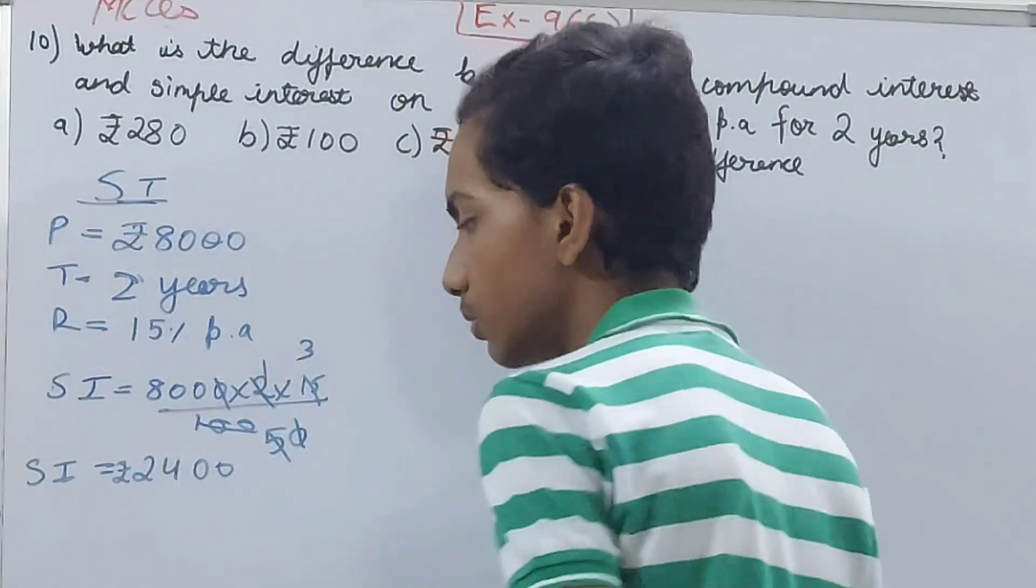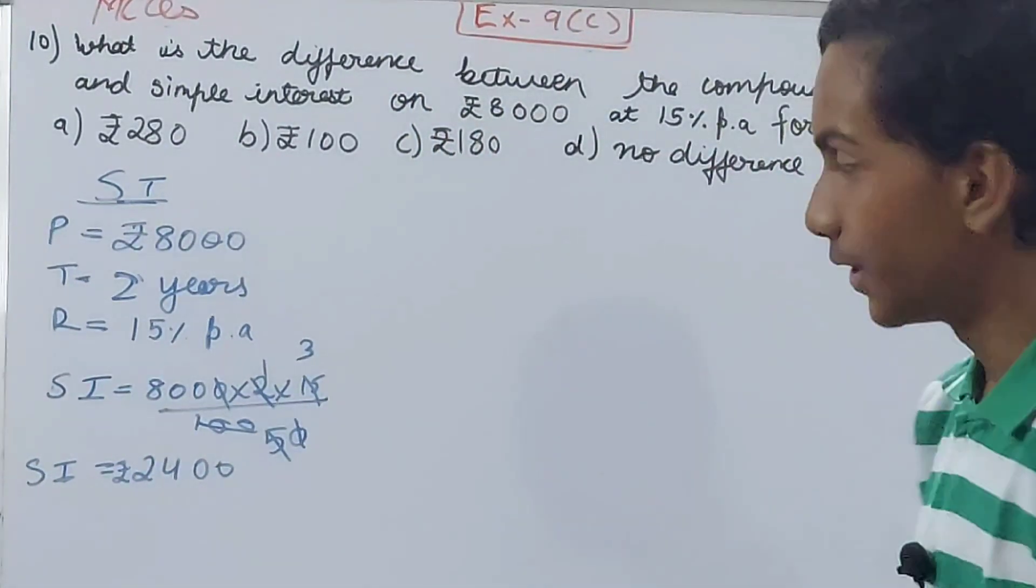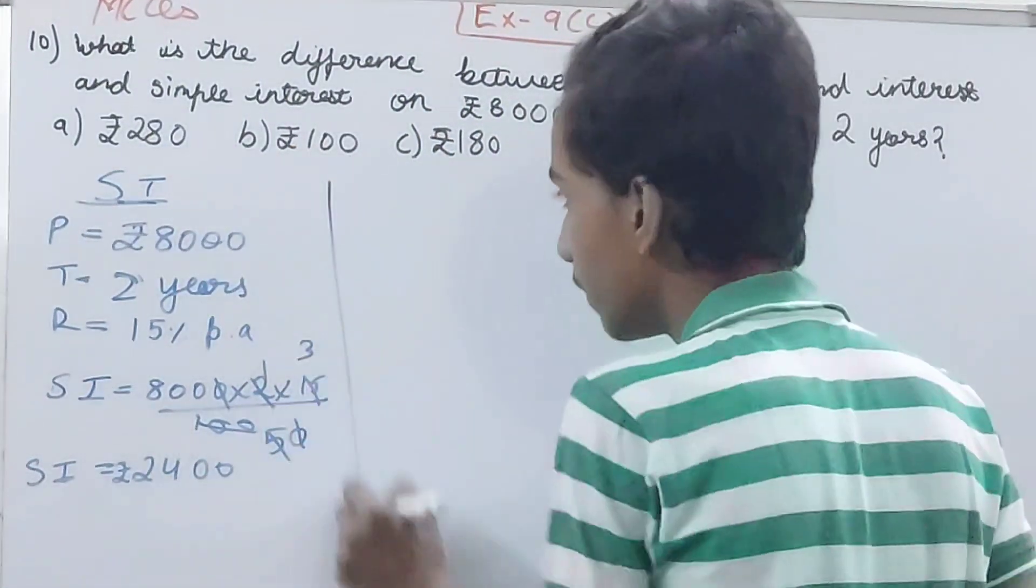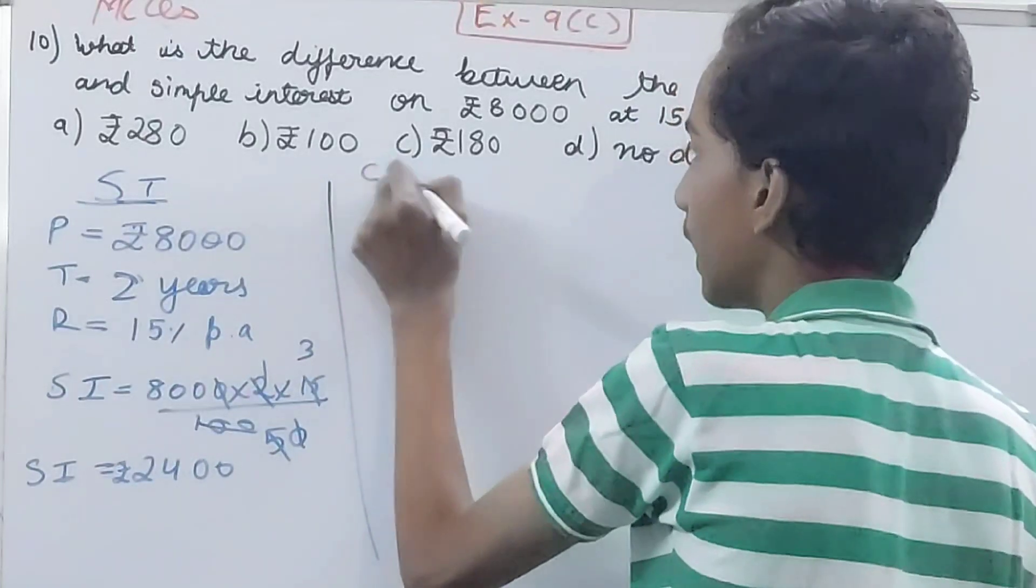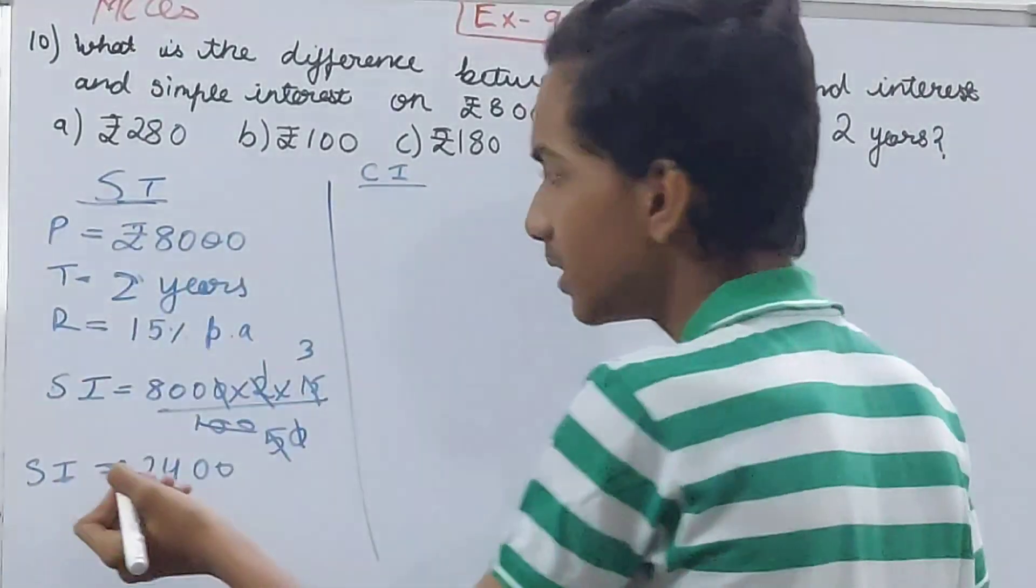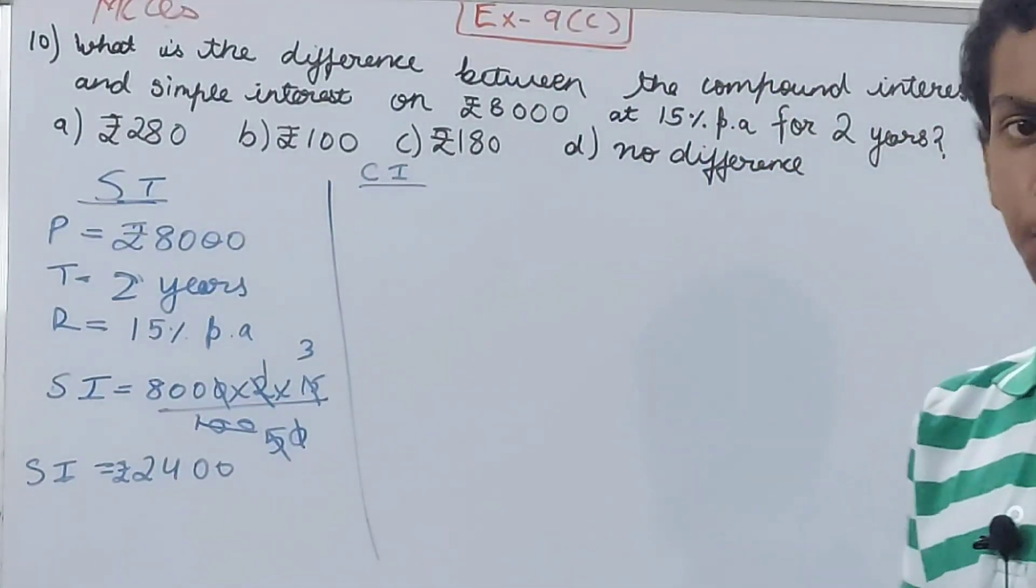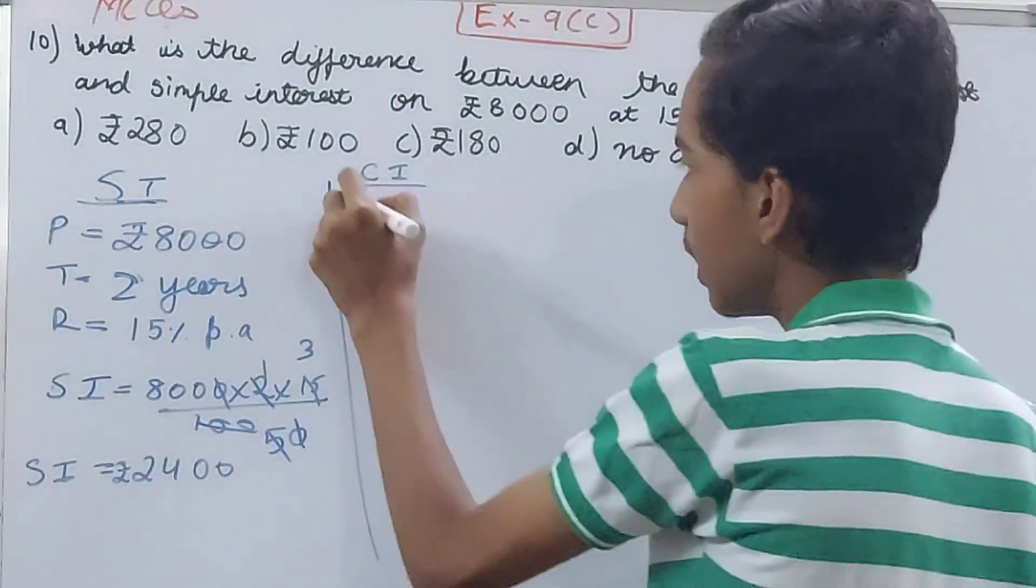Now we calculate CI. Compound interest values will be same, so I'm not writing them again because it's pointless. I will calculate amount.